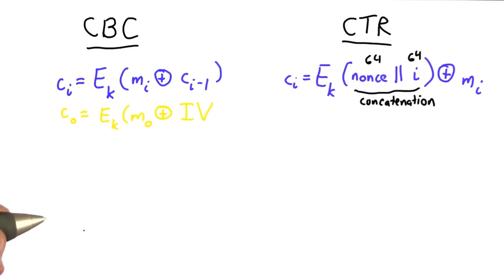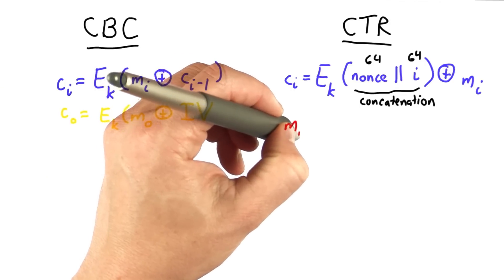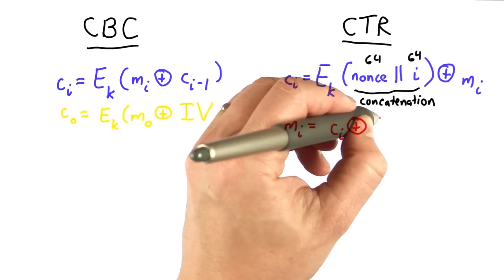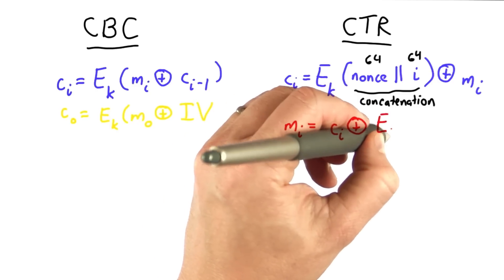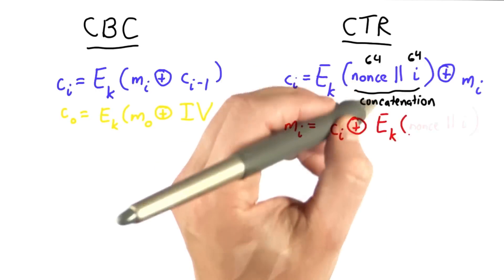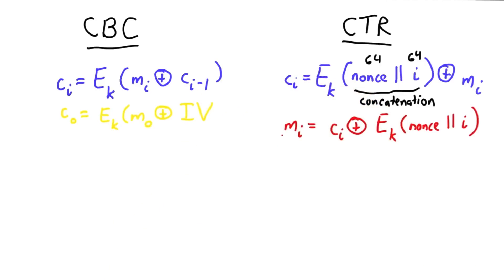To do decryption with counter mode, the ith message block is the ith ciphertext block XORed with this same value, which, as we know the key, we can decrypt. So that's how decryption is done.